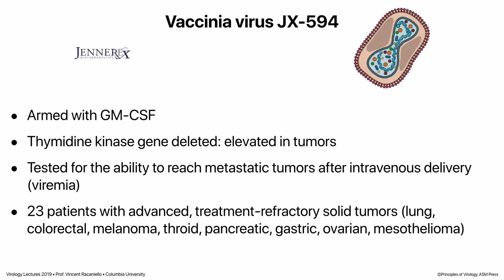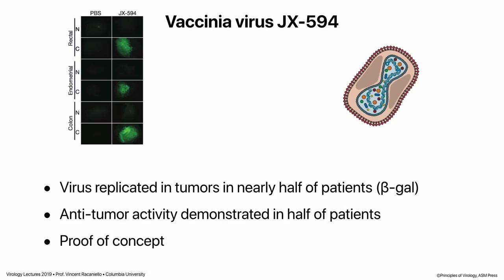A vaccinia virus vector has also been leveraged for treating tumors: it has GM-CSF inserted and the thymidine kinase gene deleted for tumor specificity. In a trial of 23 patients with advanced treatment-refractory solid tumors in a variety of organs, they delivered this virus intravenously — important because patients often have multiple metastases that can't all be injected individually. The virus also contained a beta-galactosidase gene for imaging infection in tissues. Staining of cancer versus normal tissue from rectal, endometrial, and colon cancer patients showed the virus replicating in most tumors after intravenous inoculation.